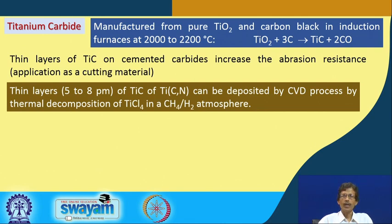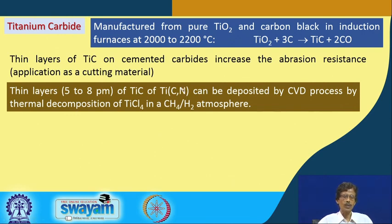Thin layers of 5 to 8 picometers depth of titanium carbide or titanium carbide nitride (a mixed carbon-nitrogen form) can be deposited by chemical vapor deposition through thermal decomposition of titanium chloride and methane in a hydrogen atmosphere. If a nitrogen source is also present, a mixed titanium carbide nitride is obtained.